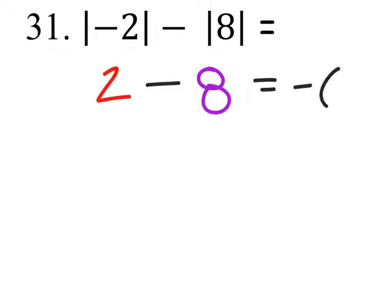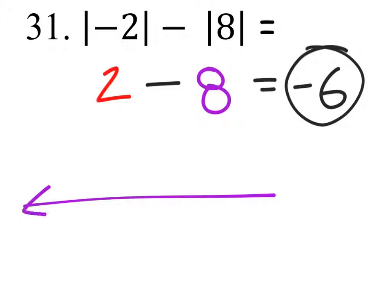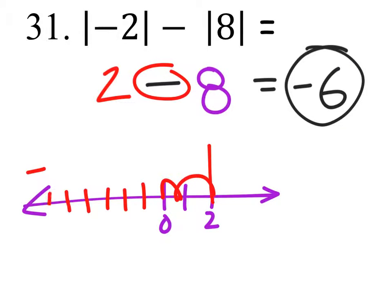2 minus 8 is negative 6. On the number line we would look at this, you'd start at 2, 0, 1, 2. And then you'd go to the left in the minus direction, 8: 1, 2, 3, 4, 5, 6, 7, 8, which is at negative 6.